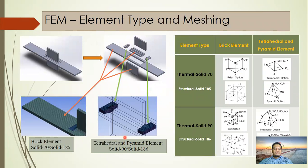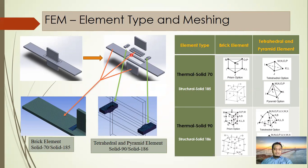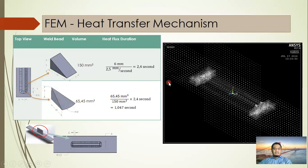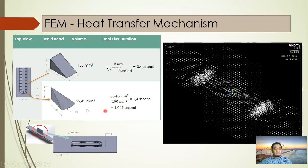For the simulation, we use a thermal solid element type and a structural solid element type. The mesh is cut to optimize brick elements, which have an efficient solution. In the weld area, we use a finer weld width mesh, and in the other area, a coarser prism weld width. Based on volume, we calculate the heat flux duration at 2.4 seconds for the prism weld width and 1.04 seconds for the finer weld width type.